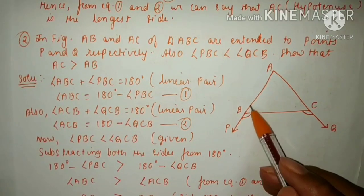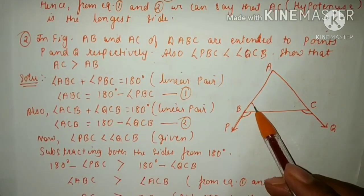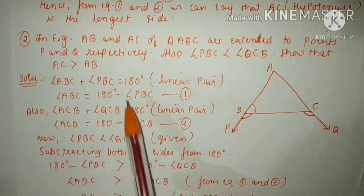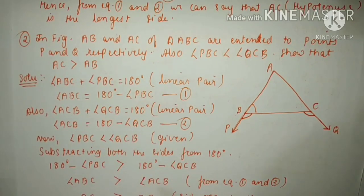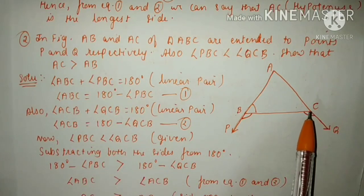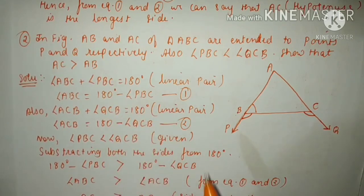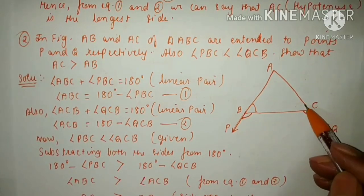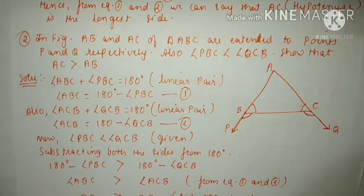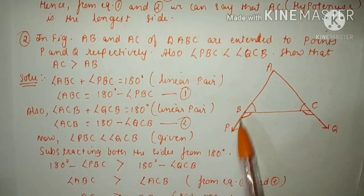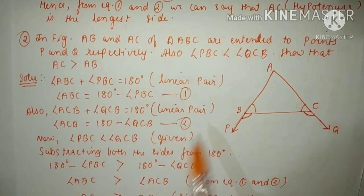First of all, this is a straight line, so this angle plus this angle will equal 180 degrees. So angle ABC plus angle PBC equals 180 degrees. Now transpose angle PBC to the right hand side, so angle ABC equals 180 minus angle PBC. Name this as equation number 1. This is also a straight line, so angle ACB plus angle QCB also equals 180 degrees, because of the linear pair.